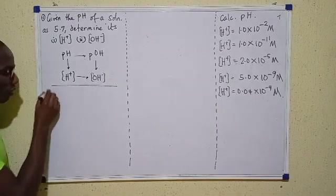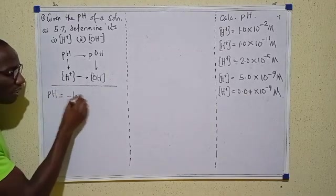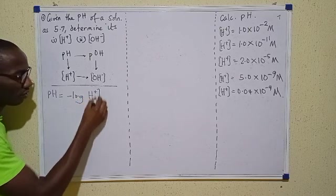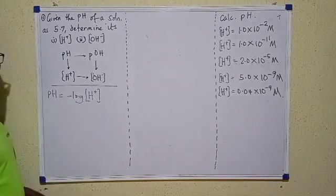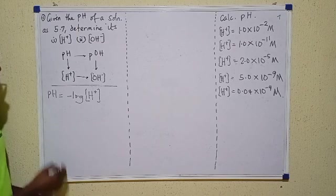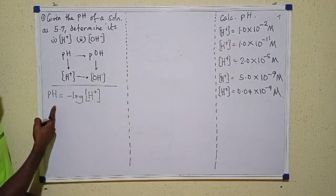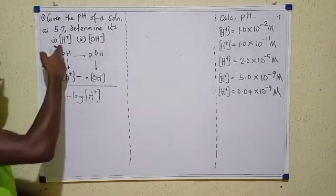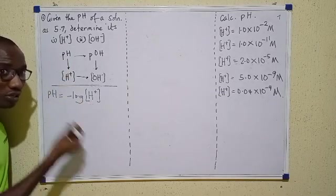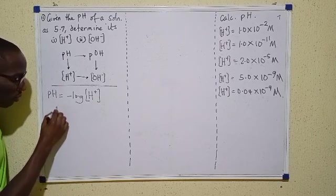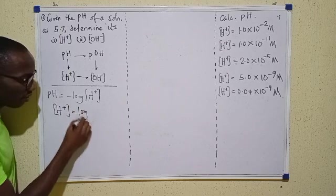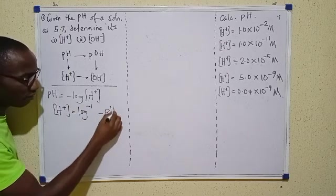From the formula we said pH equals negative logarithm to base 10 of hydrogen ion concentration. Now previously we were given the hydrogen ion concentration and required to calculate pH, but here we are given pH and asked to calculate hydrogen ion concentration. So we are going to make hydrogen ion concentration the subject of the formula, giving us: H⁺ equals the antilog of negative pH.